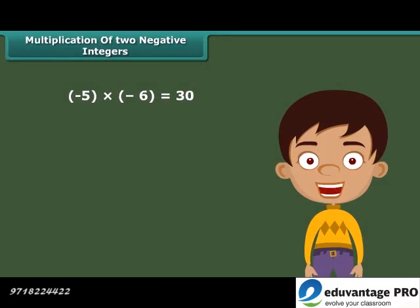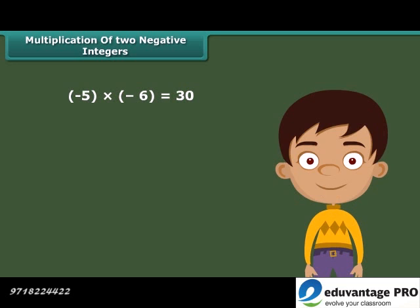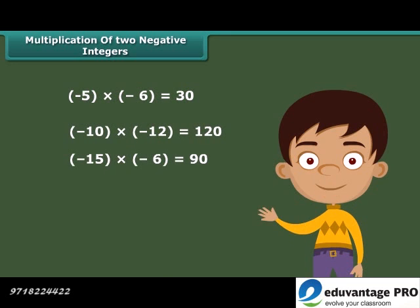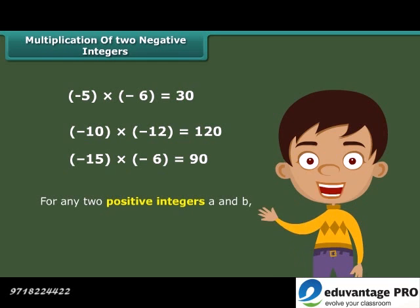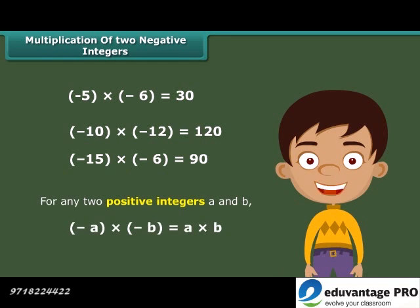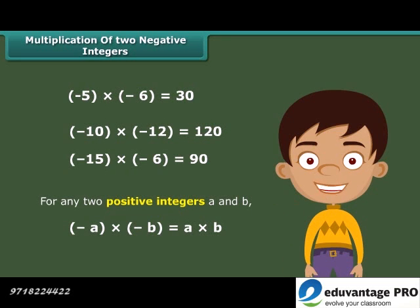The product of two negative integers is a positive integer. We multiply the two negative integers as whole numbers. In general, for any two positive integers A and B, minus A into minus B is equal to A into B.